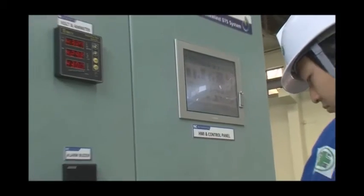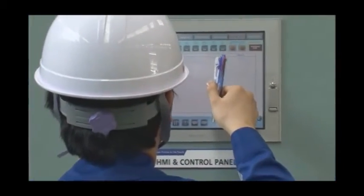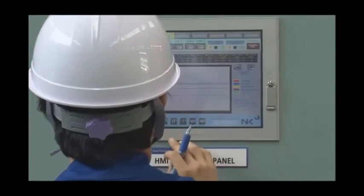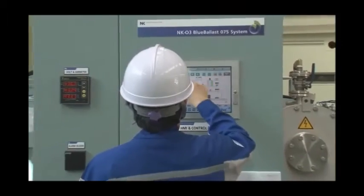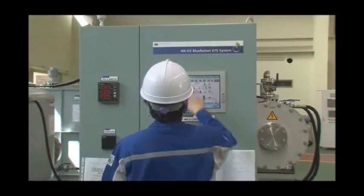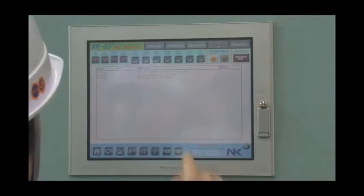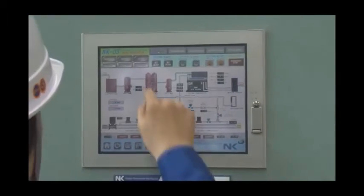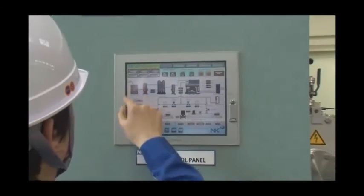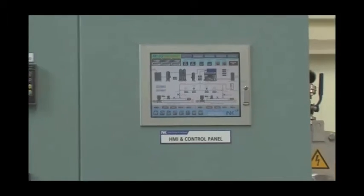All equipment and sensors are integrated and interfaced with this main control panel, which provides programmable logic controller and HMI, human machine interface. Full automatic or manual operation can be selectable according to the situation, but all operating status of NK03 blue ballast system is automatically recorded in real time. Also NK03 blue ballast system is interlocked to ship ballast management system and in emergency case, interlock can be overridden manually.